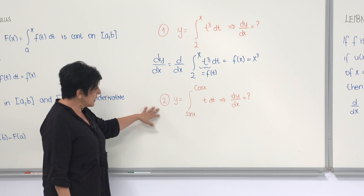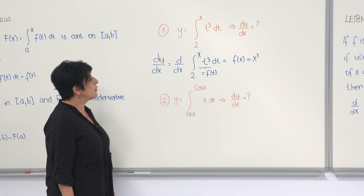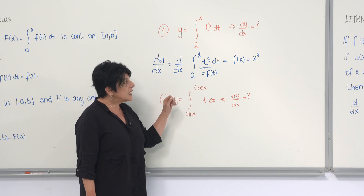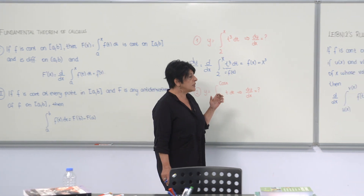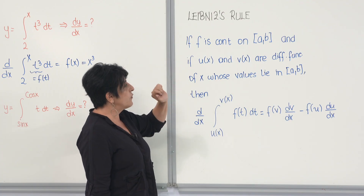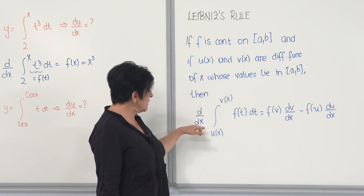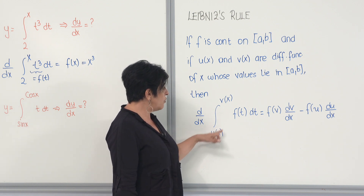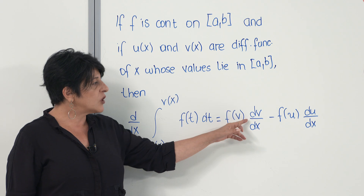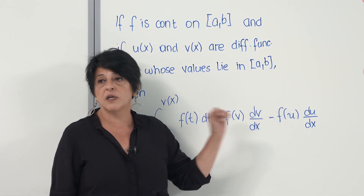The second example: y is given as the integral from sin(x) to cos(x) of t dt, and again they ask for dy/dx. When the integration limits are functions of x, it is much better to use Leibniz's rule. Leibniz's rule says: if f is continuous on a closed interval, and u(x) and v(x) are differentiable functions whose values lie in [a, b], then the derivative with respect to x of the integral from u(x) to v(x) of f(t) dt equals f(v(x))·v'(x) minus f(u(x))·u'(x).